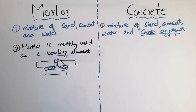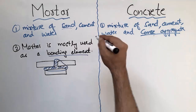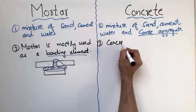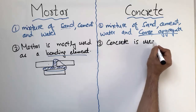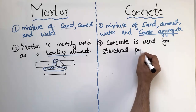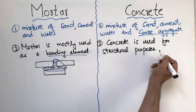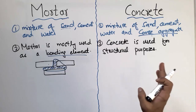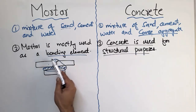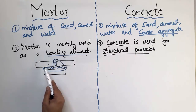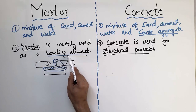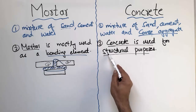Concrete is quite different from mortar. Concrete is used as a structural element to take loads. In practical application, concrete is used for structural purposes — for example, for the construction of beams, columns, slabs, footings, and shear walls. The main purpose of concrete is to take load, not to act as a bonding element like mortar.